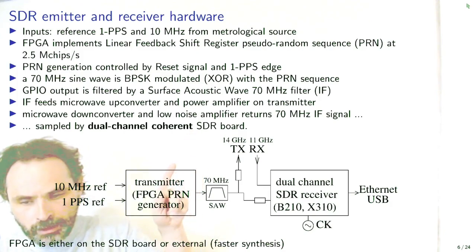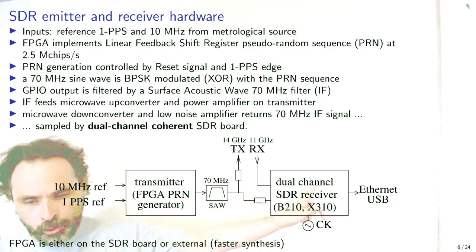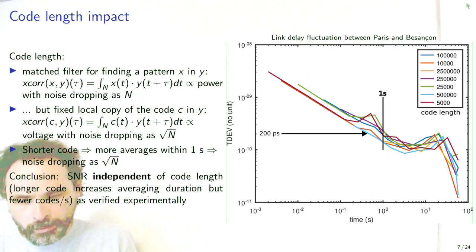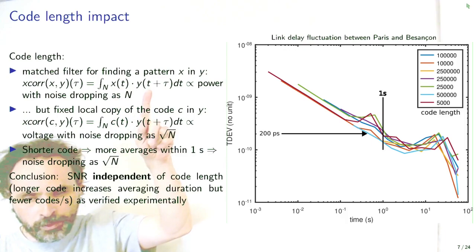The sine wave will be upconverted to be transmitted towards the satellite on the 14 GHz uplink and the 11 GHz downlink will be fed back to the software-defined radio receiver. The mandatory requirement of all this work is to have a coherent two-channel software-defined radio receiver in order to have, on the one hand, a recording of the local time, as generated by the pseudorandom sequence, and the downlink that has been recorded from the remote end.